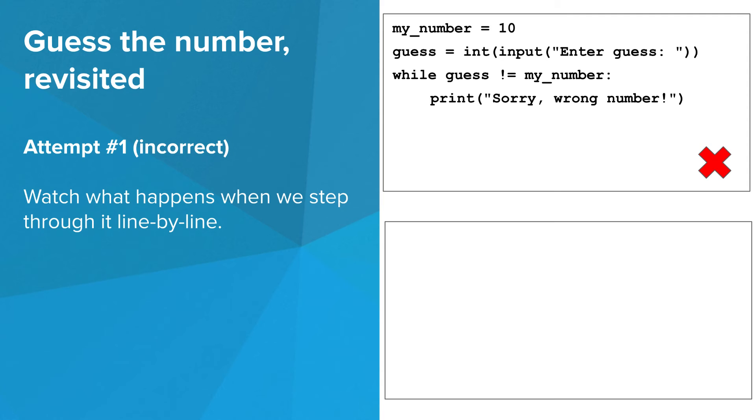Now let's revisit that guess my number program. At the right, you will see a first, incorrect attempt at changing the program to use a while loop. Watch what happens when we step through this line by line.